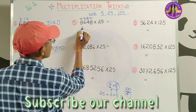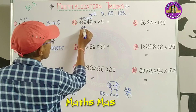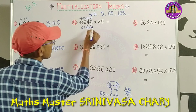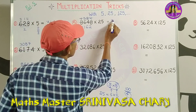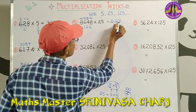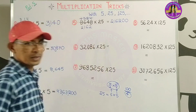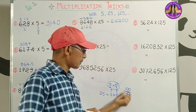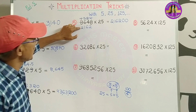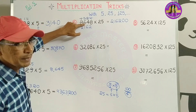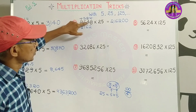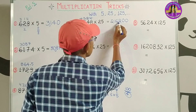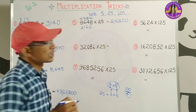2 twos, 2 ones. 1 is 1 and 2. 2 sixes, 2 twos. So the answer becomes 2, 1, 6, 2 with 2 zeros — 216,200. If you have 4 twos, 4 ones are 4. If you have 4 sixes are 24, 4 twos. So 2,1,6,200.